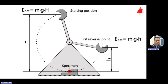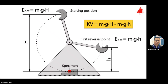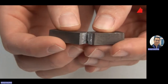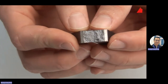You have a starting position — big H. After you knock the sample, energy is absorbed and the hammer continues to disperse until maximum point, which gives you small h. The energy used to break the sample equals the maximum potential energy minus the minimum potential energy: mgh_max minus mgh_min.